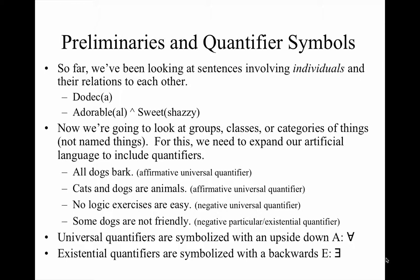Now let's look at how we are going to add to and adjust our existing system of logical notation. We're going to use all of the same connectives we already know: negation, conjunction, disjunction, conditional, and biconditional. We're also now going to be able to quantify using the universal quantifier — effectively an upside-down A — and the existential quantifier, which is a backward E.